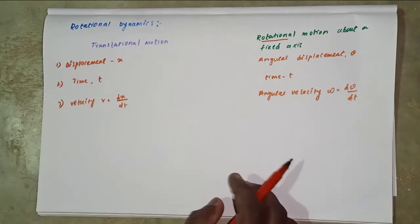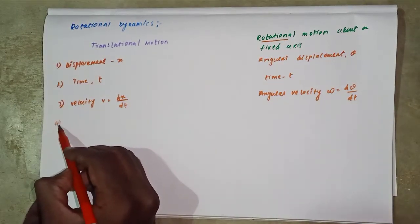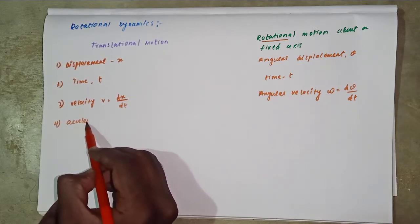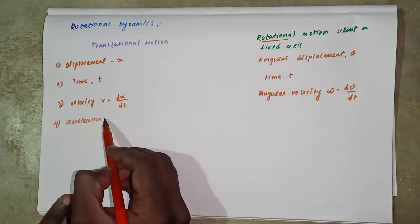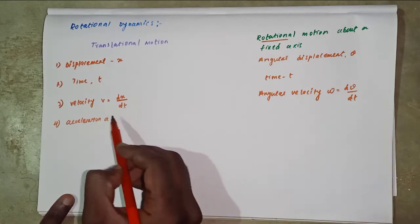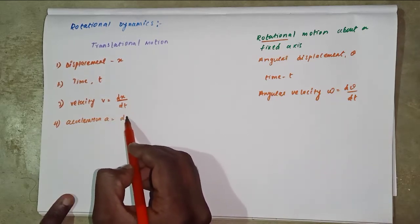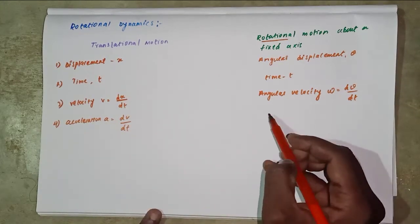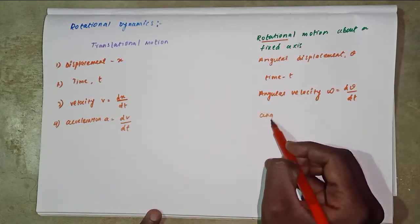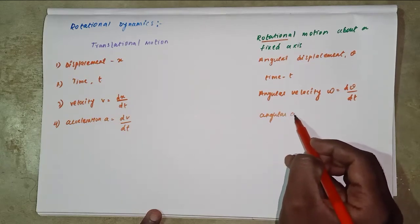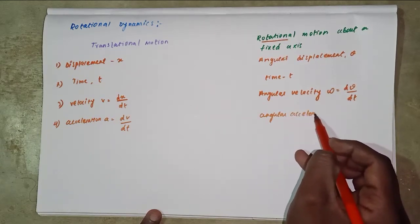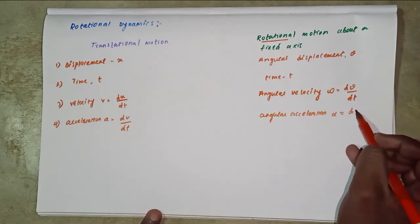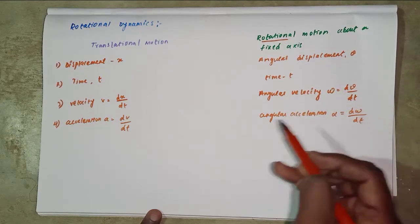Fourth one, linear acceleration. Acceleration a equal to dv divided by dt. This is angular acceleration alpha equal to d omega divided by dt.